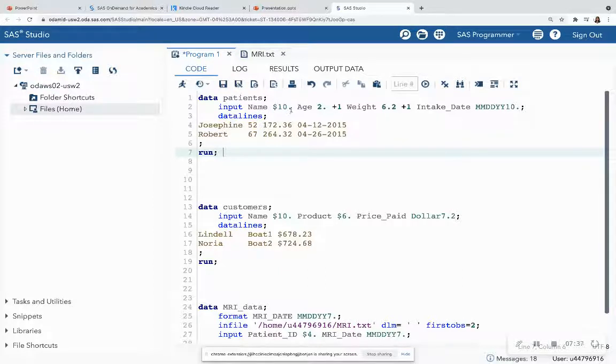In my input statement, I have name with the informat $10. I have age. I have weight that is of length six with two decimal places. So if I count the weight, I have 1, 2, 3, 4, 5, 6. That's where the first number comes from. It's the entire length of the number.